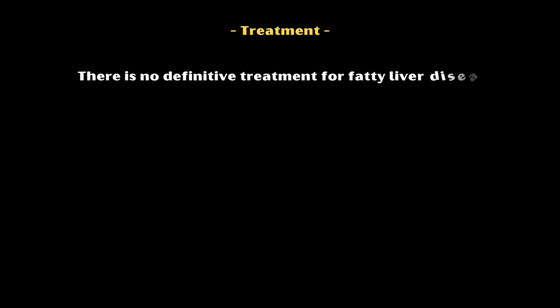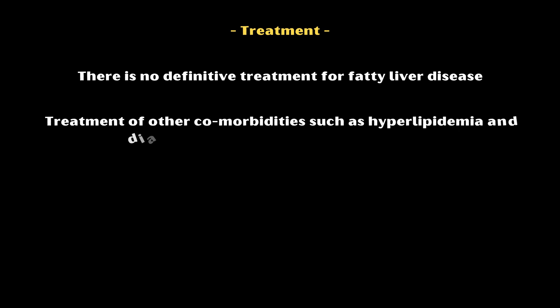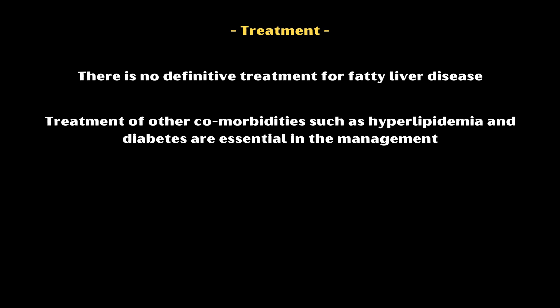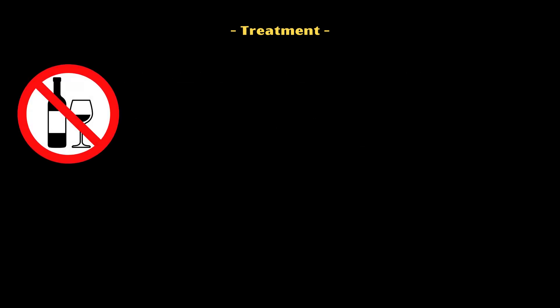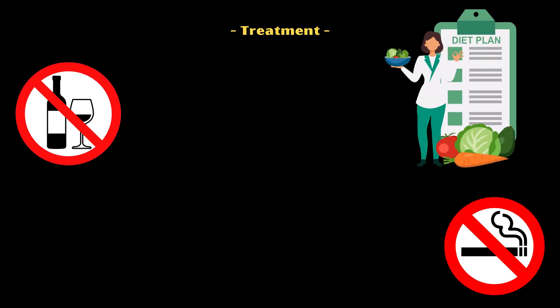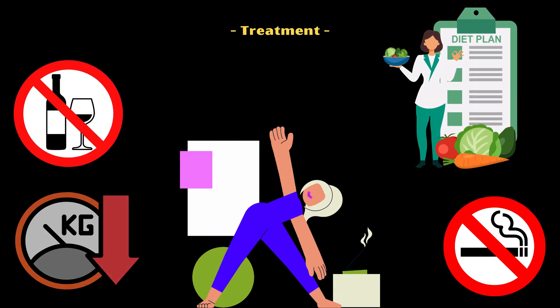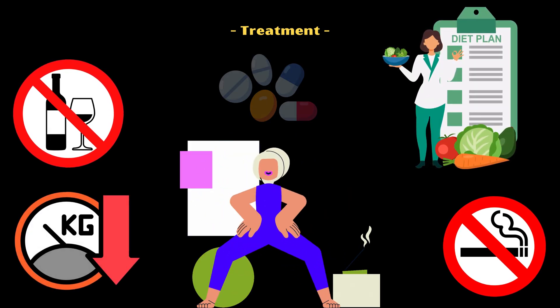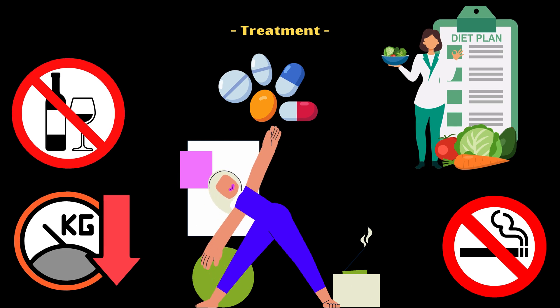There is no definitive treatment for fatty liver disease. However, treatment of other comorbidities such as hyperlipidemia and diabetes are essential in the management. General measures include abstinence from alcohol, quitting smoking, dietary modifications, regular exercising, weight loss, and treatment of underlying disease conditions.